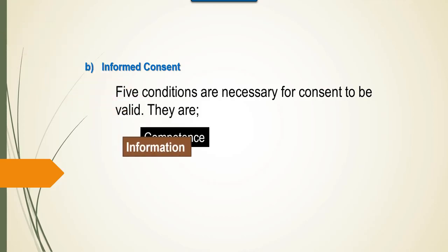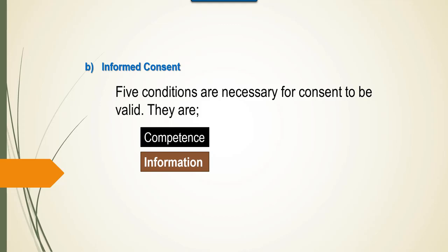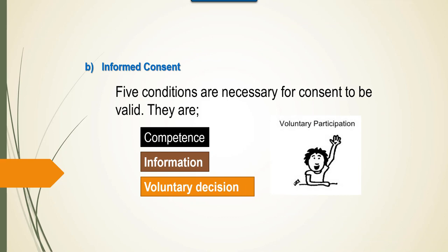The person making consent should have enough information about the project to make an informed decision. Hence, the investigators have the responsibility of disclosing the details of the project. The person making a choice should do it on his own, knowing everything about the research. No undue influence or coercion should be there while making the decision. Coercion involves the use of force, intimidation, or threats to make someone comply with a demand or request.